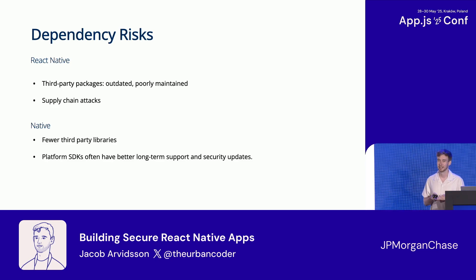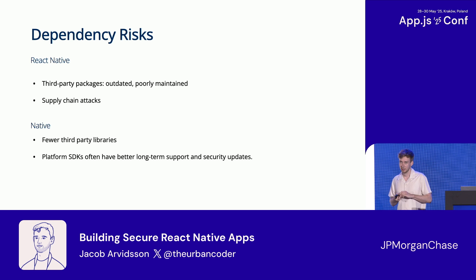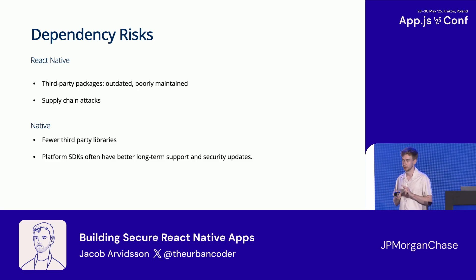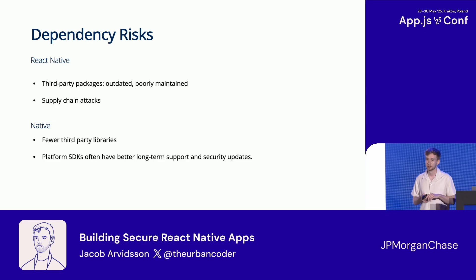With JavaScript we're also heavily reliant on third-party packages, which can be outdated or poorly maintained. When new vulnerabilities are introduced it might take a while before they're fixed, and we're more susceptible to supply chain attacks unless we can control and audit our libraries. Native apps also use third-party libraries, but often not as many, and they more often rely on platform-specific SDKs which usually have better maintenance and quicker security updates.